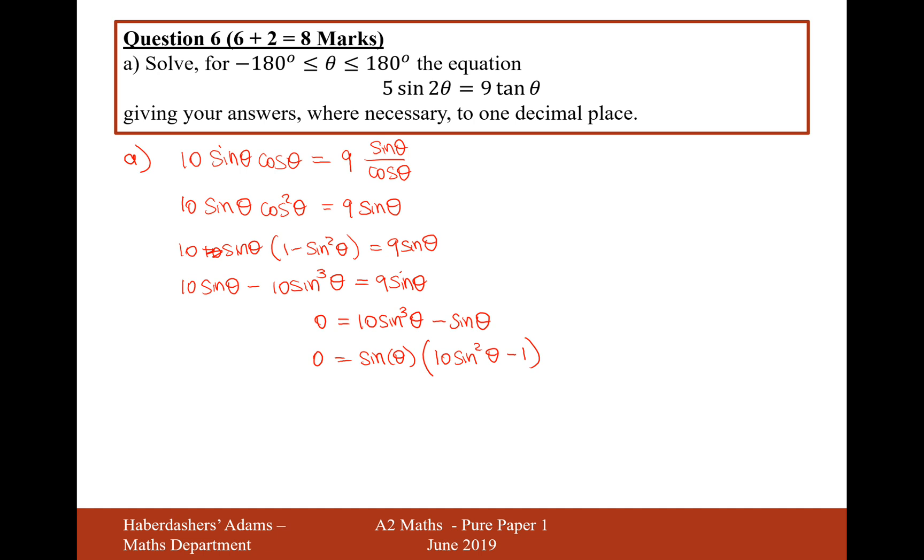The next thing we're going to do is we're going to now solve each of these brackets equals 0. So sin θ equals 0. And for this bracket here is going to be 10 sin² θ minus 1 equals 0.